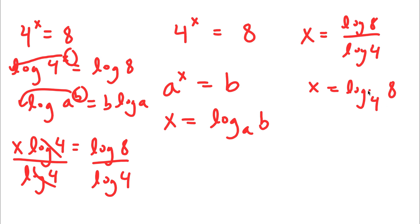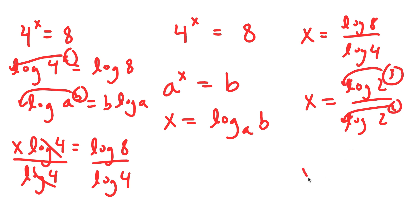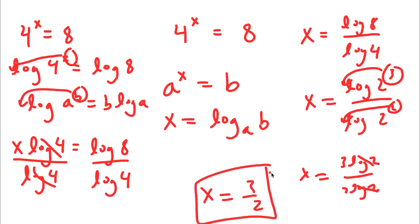Now that I have log 8 over log 4 — log 8 is log of 2 to the power of 3, and log 4 is log of 2 to the power of 2. Moving the exponents to the front, I get 3 log 2 over 2 log 2. The log 2's cancel out, and I'm left with x is equal to 3 over 2. So that's the second method.